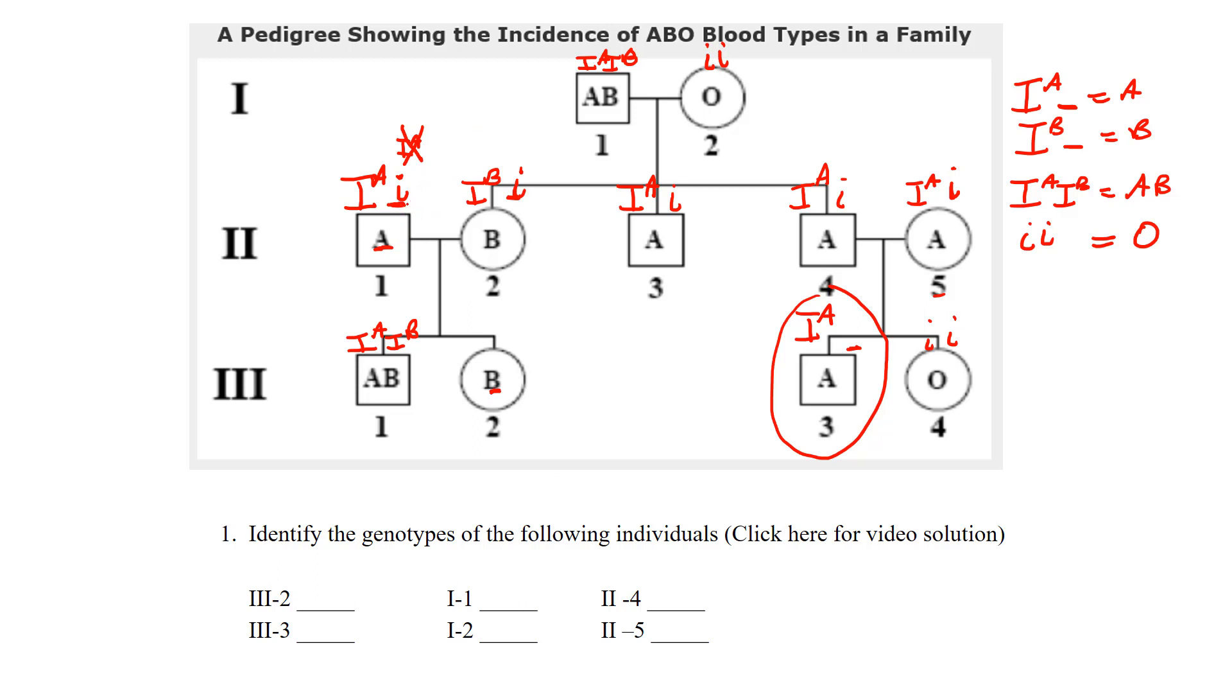But that person must have contributed, or that dad must have contributed a little i here. And of course that kid is B blood, has to be carrying the B allele. But that's how we know this is heterozygous. If it was I^A I^A, there's no way they'd have a B baby.